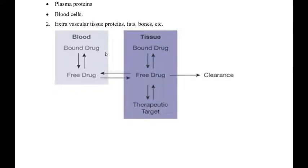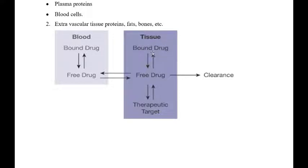As you can see in the figure, there are two sides of drug interactions: number one is the blood, and number two is the tissue. In the blood, the drug will be present as bound drug or free drug. This free drug will be available for the tissues or will be available from the blood to the target site. In the tissues, the drug will also be present in two forms: bound drug and free drug.